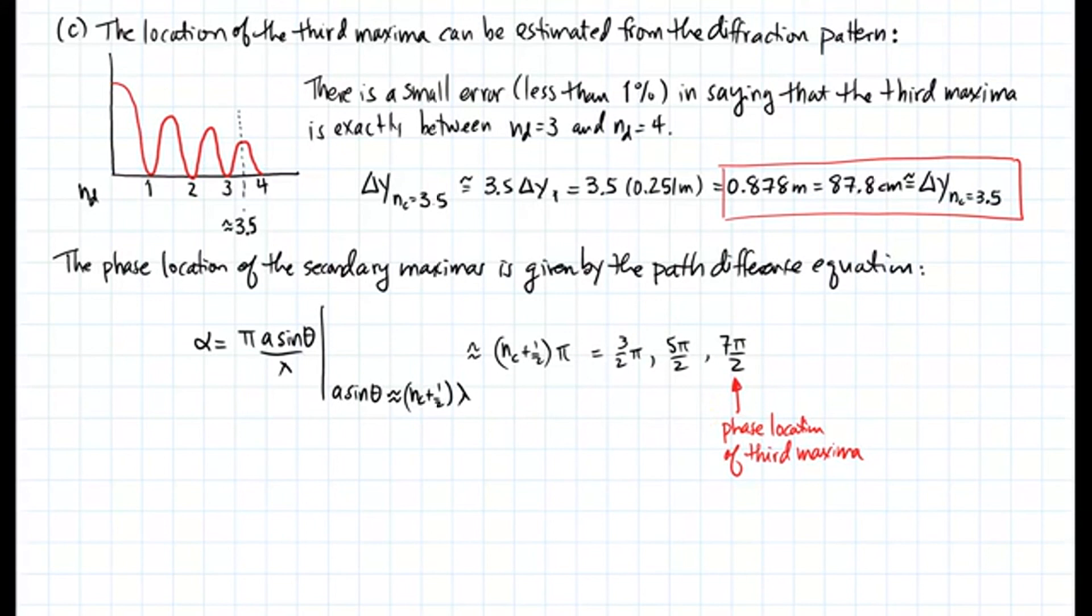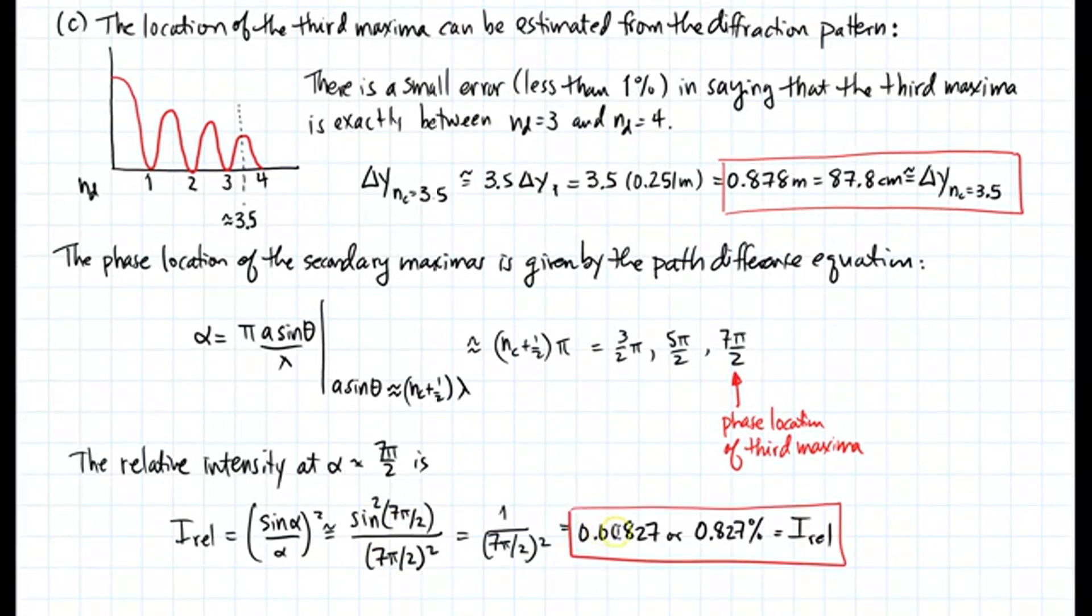Relative intensity at 7 pi over 2 is sine of alpha over alpha squared. So if I have sine squared of 7 pi over 2, that's 1. I get 0.00827 or 0.827% for the relative intensity.